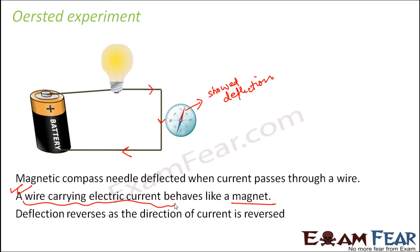Not only this, it was also observed that the deflection reverses as the direction of current reverses — which is all the more interesting. When the current was flowing in one direction, the deflection was in that direction. As soon as the direction of current was reversed, the direction of deflection also reversed. This very clearly indicated that the deflection is due to the current, confirming it was not by chance that the magnetic needle deflected — it is because of the current only.